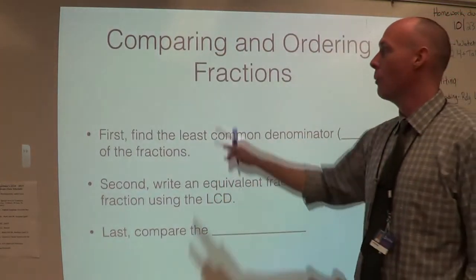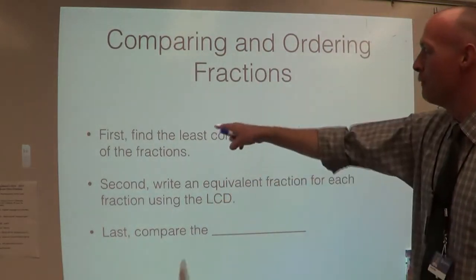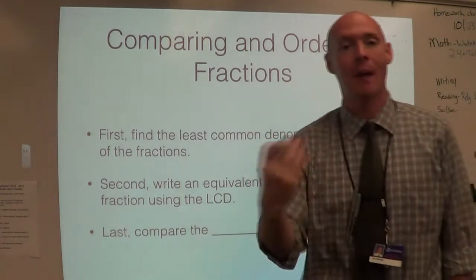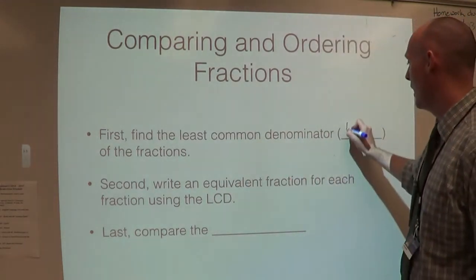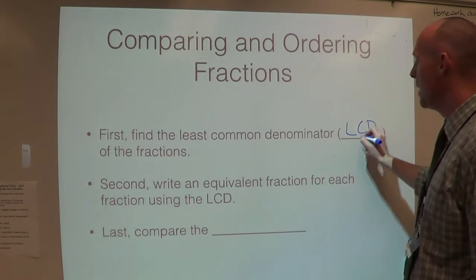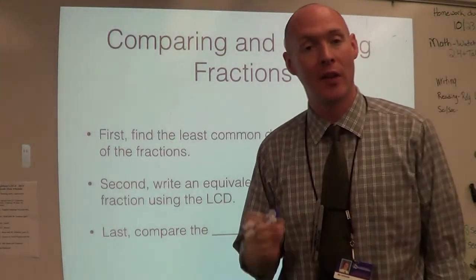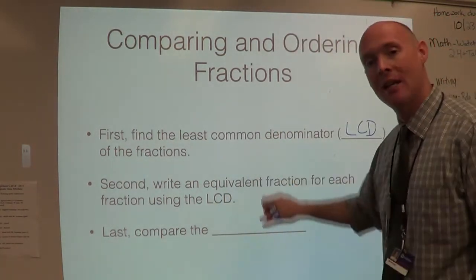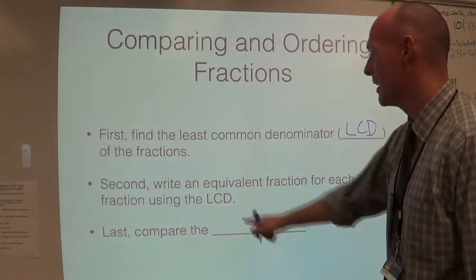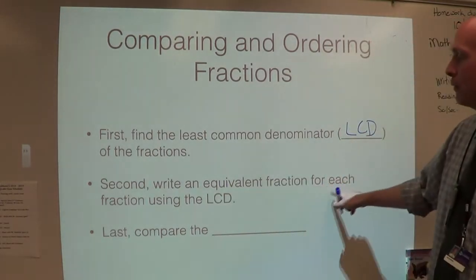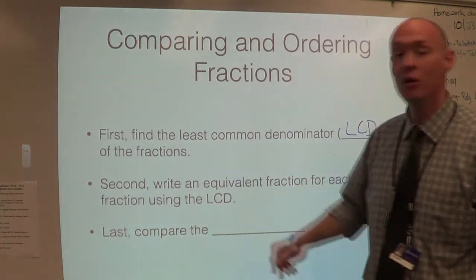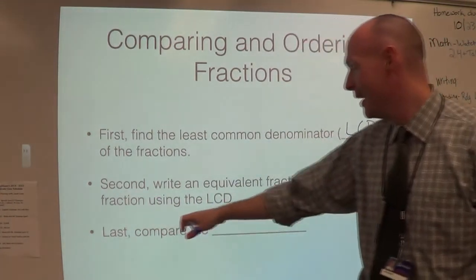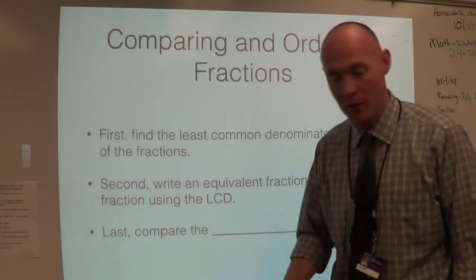First, I have the rules for when we're comparing fractions. First, find the least common denominator — I'm going to refer to that in class as LCD. If you remember the rules for finding the least common multiple that we did a few weeks ago, least common denominator is going to be the same thing. Second, write an equivalent fraction for each fraction using the LCD. Last, you're going to compare the numerators.